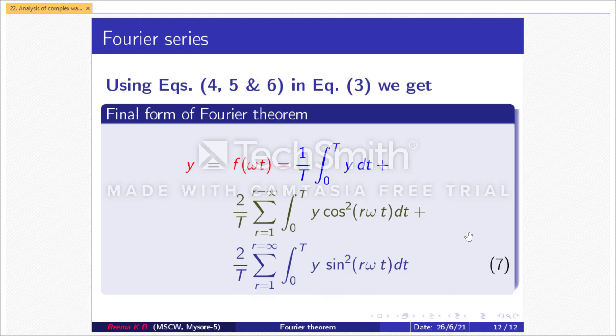Using equations 4, 5, and 6 in equation 3, we get the final form of Fourier's theorem: y = f(ωt) = (1/T)∫₀ᵀ y dt + (2/T)Σ(r=1 to ∞)∫₀ᵀ y cos(rωt) dt + (2/T)Σ(r=1 to ∞)∫₀ᵀ y sin(rωt) dt. Let us consider this as equation 7. This is the final form of Fourier's theorem. Hope this concept is clear to you. Thank you.